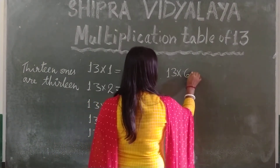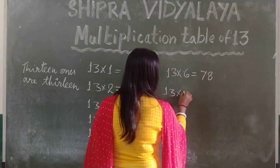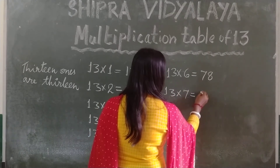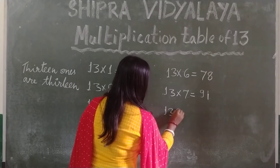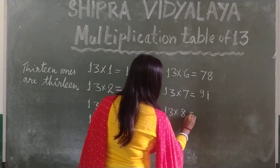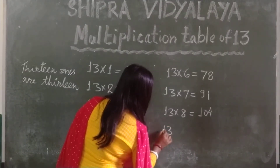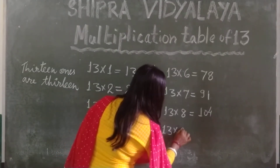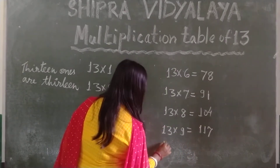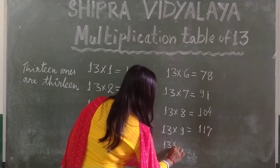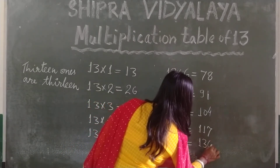13 6's are 78. 13 7's are 91. 13 8's are 104. 13 9's are 117. 13 10's are 117.